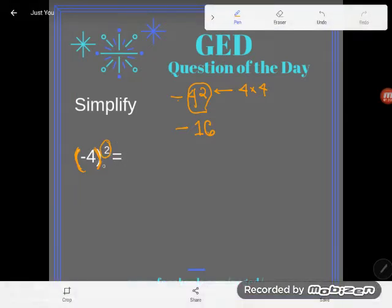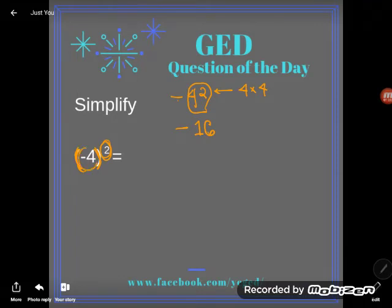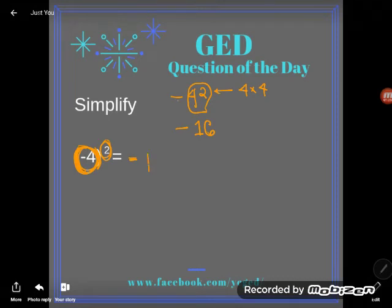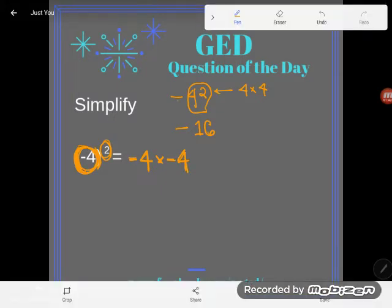But something really different happens with the parentheses. What parentheses do with the exponent outside is increase the size of the base — the thing being worked on by the exponent. What I'm saying is: take this entire negative 4 and square it. So I want you to take negative 4 and multiply it by itself.